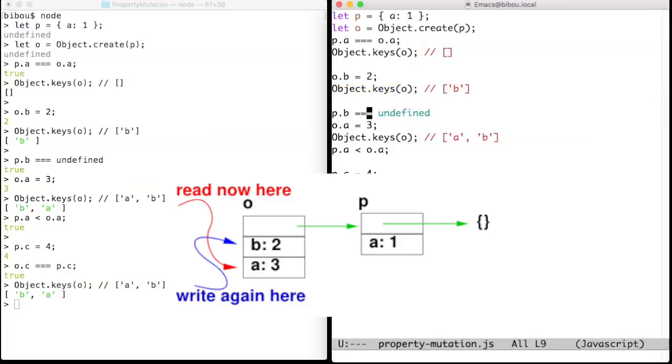Undefining B does change the value of property B, but not its existence. We also modify property A of O, therefore creating a new proper key in O.